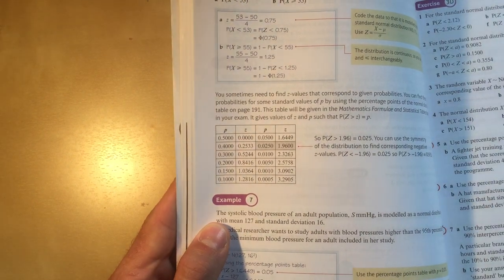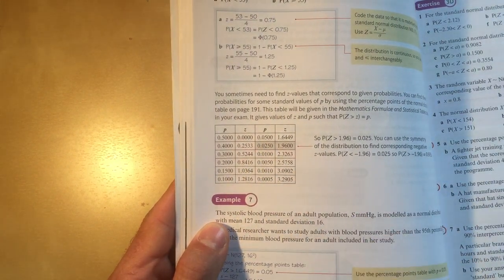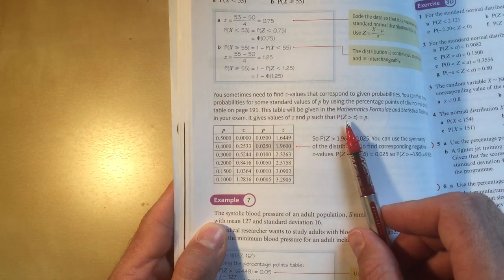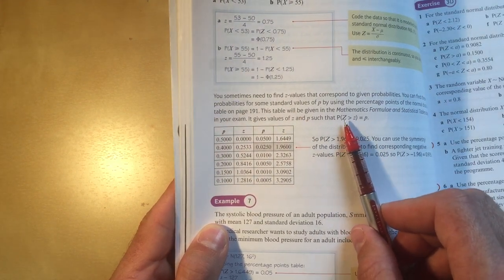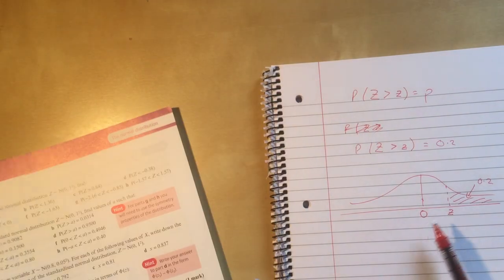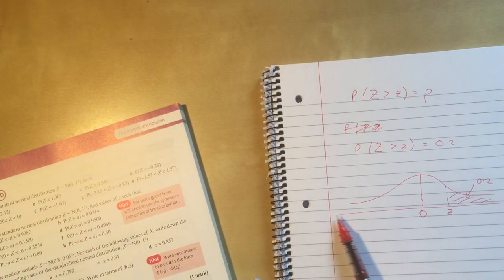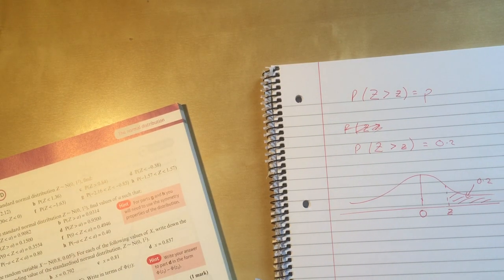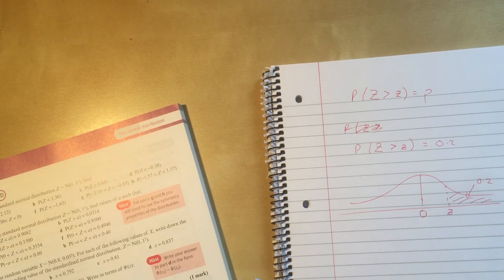Well actually you find a lot of the time we do need these things. It might seem perverse that suddenly we want the Z, capital Z to be bigger than this value here and all the other tables are cumulative values so up to little z, but we're often asking this sort of question so that's why the P tables are rigged up that way around.